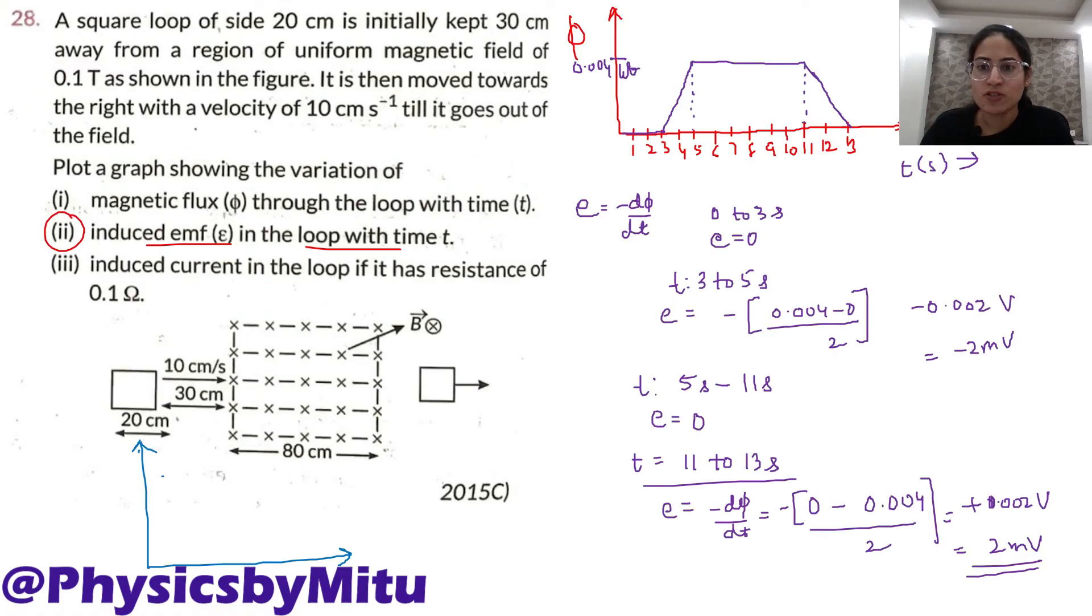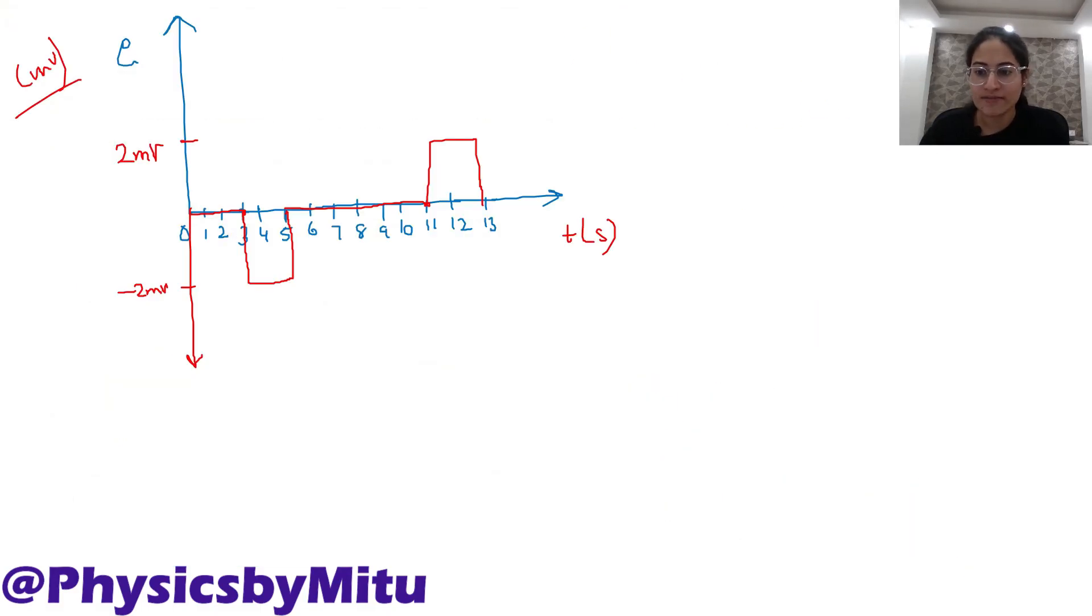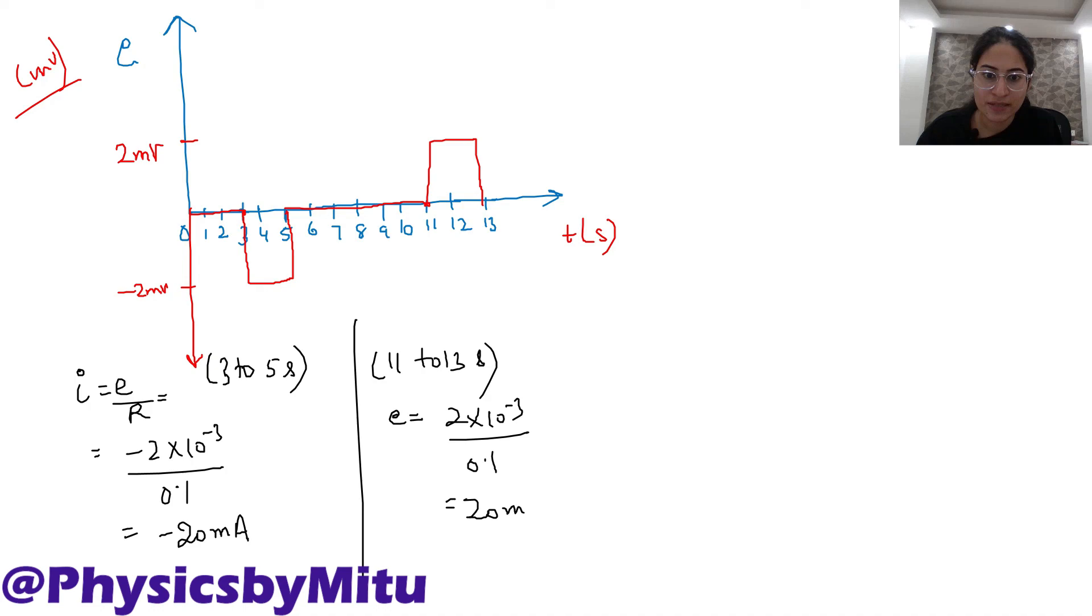The last part is induced current in the loop if it has resistance of 0.1 ohm. What is the value of current? Current is E by R. For this region, 3 to 5 region, minus 2 millivolt, 10 to minus 3, resistance of 0.1 ohm. Answer will be minus 20 milliampere. This is for 3 to 5 seconds. And from 11 to 13 seconds, EMF is 2 millivolt upon 0.1, plus 20 milliampere.